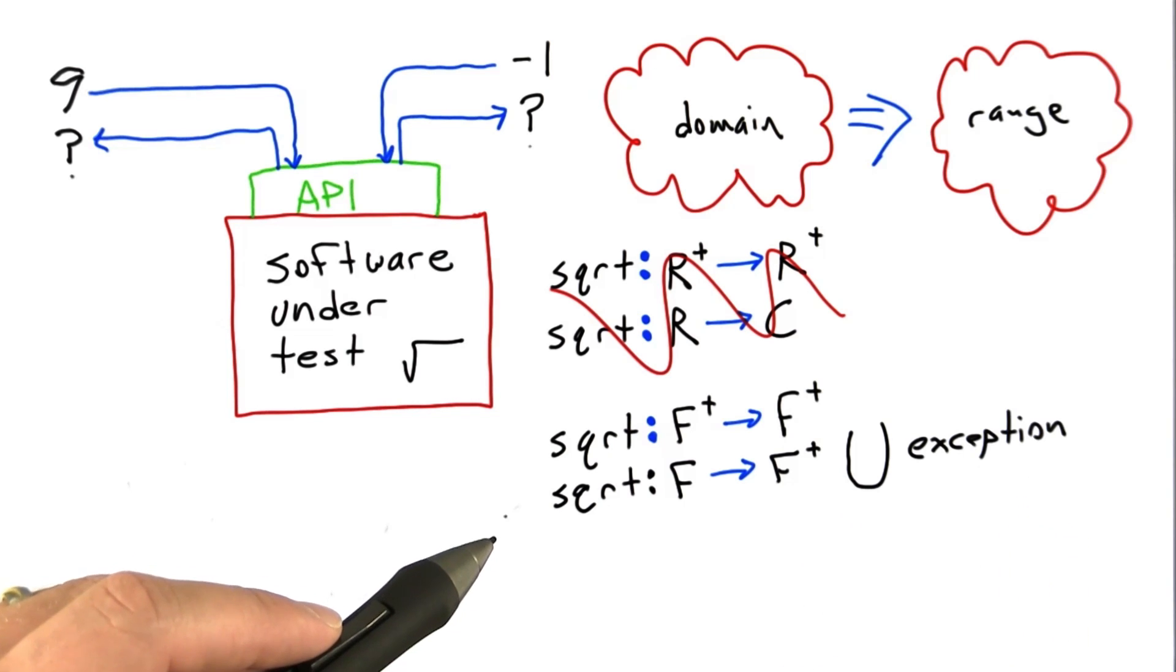Given this specification, let's get back to software testing and ask: should we test this square root function with negative inputs?